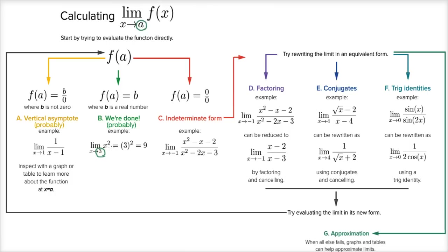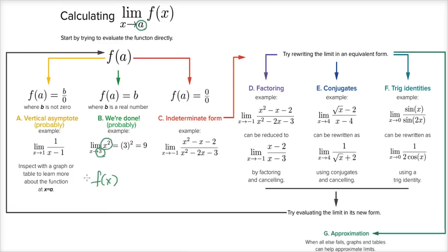In general, if you're dealing with pretty plain vanilla functions like x squared, or rational expressions, or trigonometric expressions, and if you're able to just evaluate the function and it gives you a real number, you are probably done. If you're dealing with a piecewise-defined function, or you know visually there's a jump or discontinuity around that point, you've got to be a little bit more careful. But in general, for continuous plain vanilla functions, if you evaluate at x equals a and get a real number, that's probably going to be the limit.